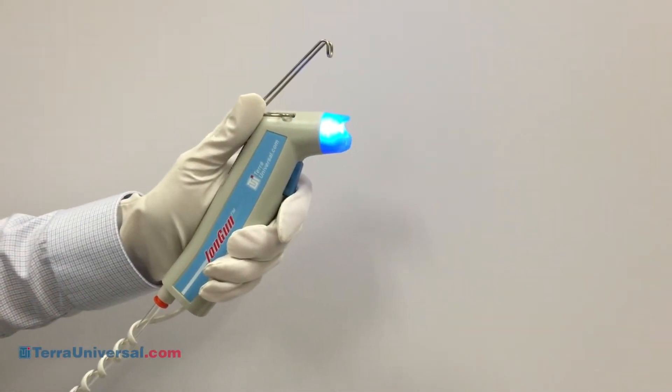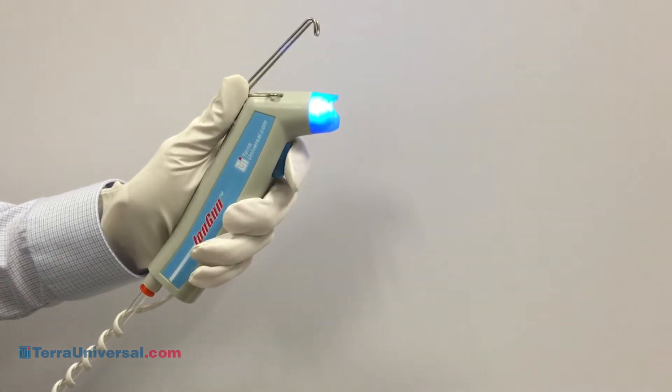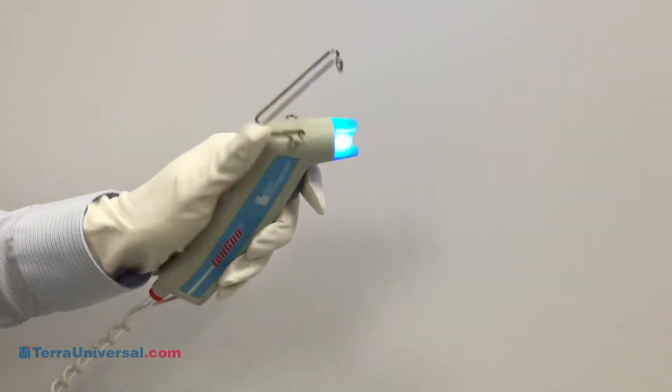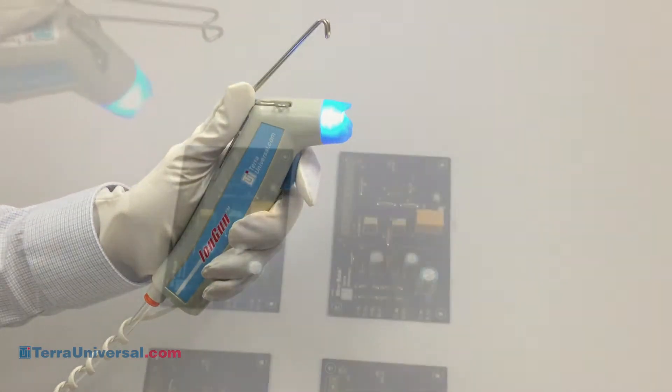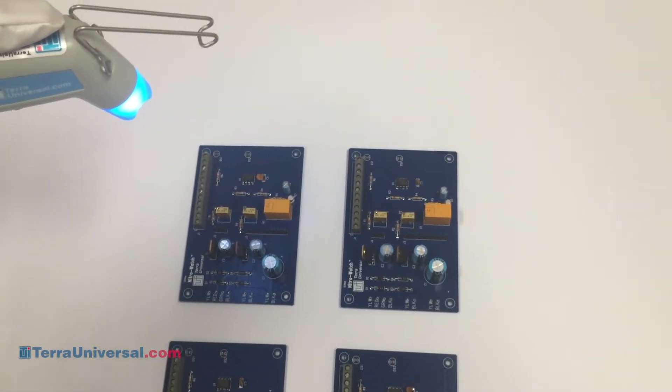The ionizing blow-off gun makes a great addition to any ESD control program, whether you want to protect your devices from static discharges or prevent particle contamination due to static attraction.